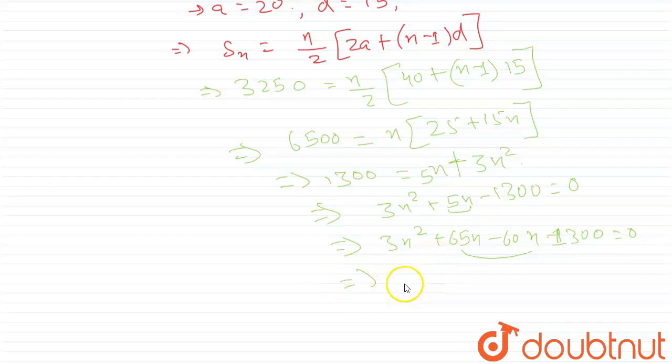And this will become minus, and we will take common 20, then it will become 3n plus 65, that is equal to 0. Now we have both the sides common as 3n plus 65, and we are just left with n minus 20 that is equal to 0.